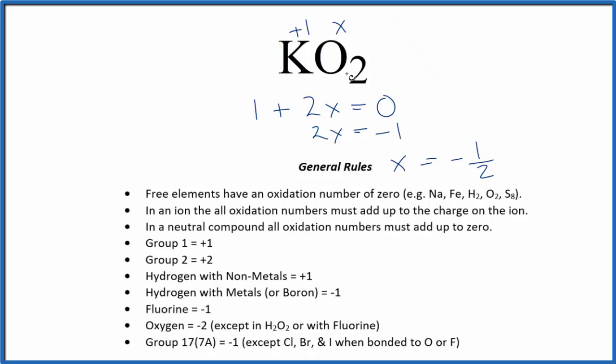What that means is each oxygen here, we have two oxygens, each oxygen is going to be negative one half. So two times negative one half is negative one. And negative one plus one gives us that zero since it's a neutral compound.